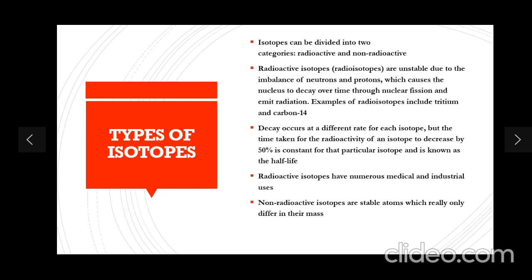Scientists classify radioactive isotopes according to their creation process — they are long-lived, cosmogenic, anthropogenic, and radiogenic. You do not have to mention these terms in your examination papers. Decay occurs at a different rate for each isotope, but the time taken for the radioactivity of an isotope to decrease by 50% is constant for that particular isotope, and is known as the half-life.